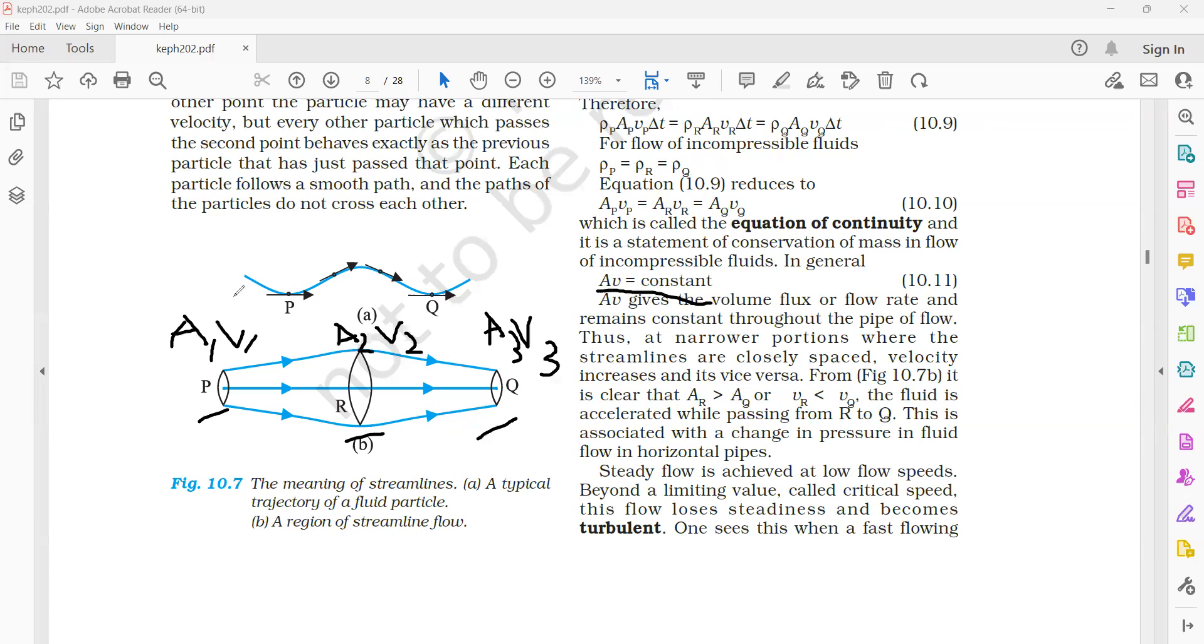Here you see, A1 area is small compared to A2, but A1 V1 must be equal to A2 V2. When it happens, because A1 is very much small compared to A2, then the velocity V1 must be more compared to V2.